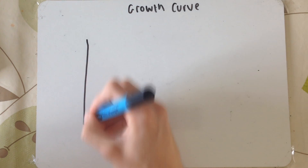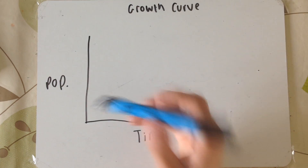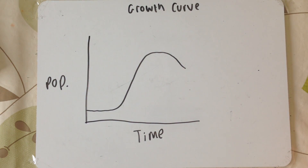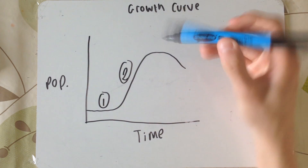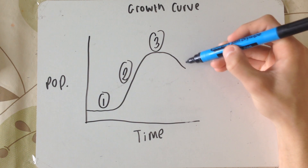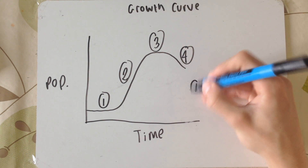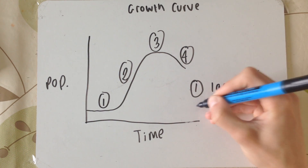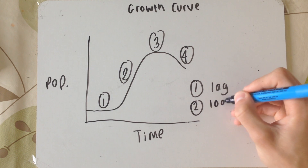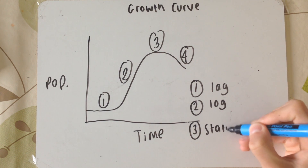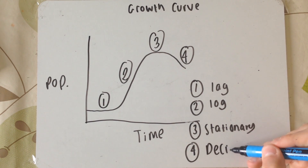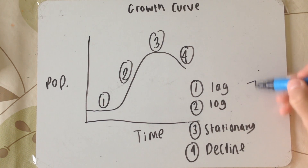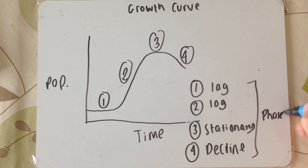So now we're going to talk about the growth curve. As you can see, the population over time initially remains stable, then increases, then goes stable again, and then decreases — shown in steps 1, 2, 3, and 4. These stages have names: the first stable phase is the lag phase, the population increase is the log phase, the next stable phase is the stationary phase, and number 4 is the decline phase where the population decreases.